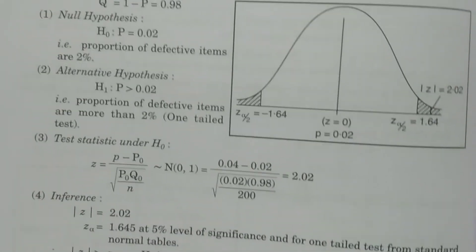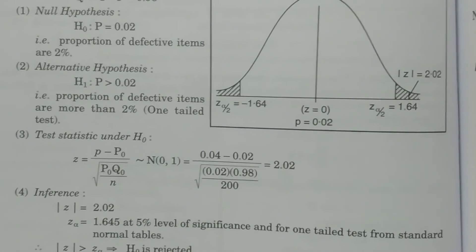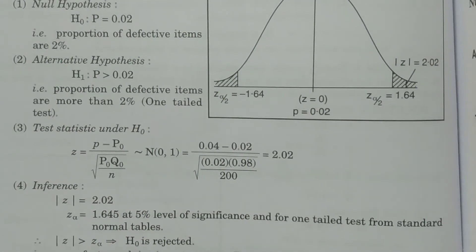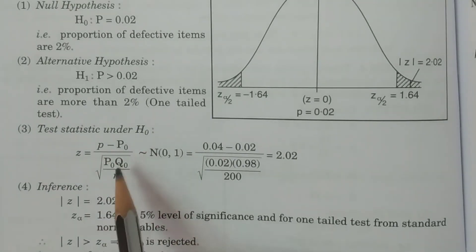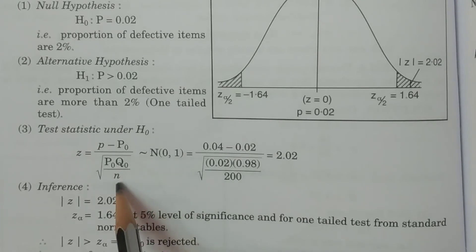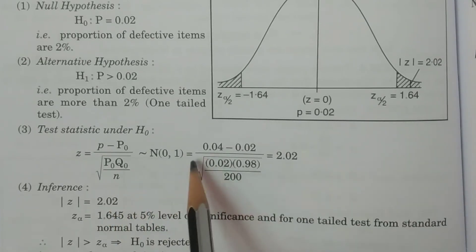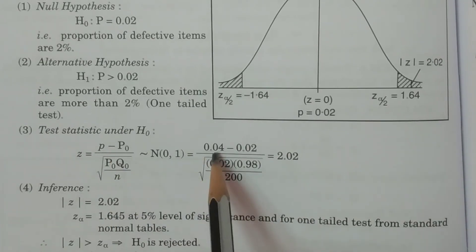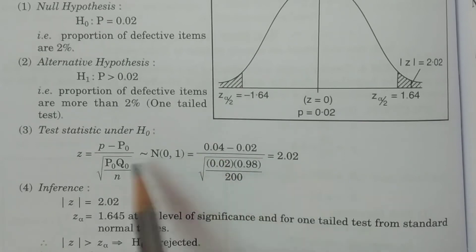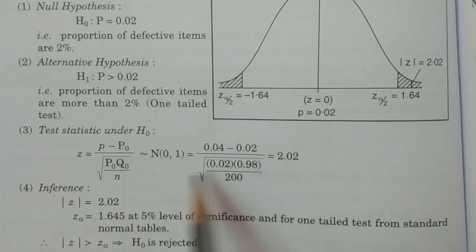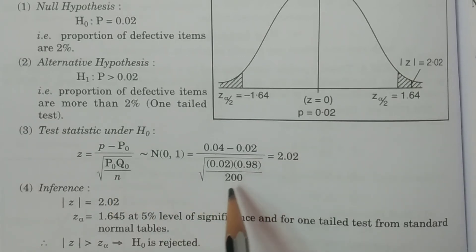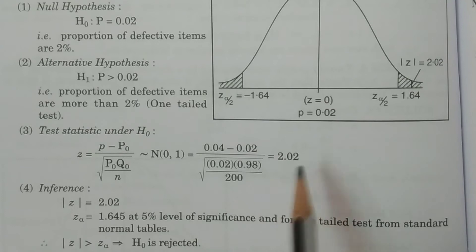The test statistic under H₀ is Z equals small p minus P₀ divided by the square root of capital P₀ times Q₀ divided by n, which follows N(0,1). Substituting the values: small p = 0.04, P₀ = 0.02, divided by the square root of 0.02 times 0.98 divided by 200, giving Z equal to 2.02.